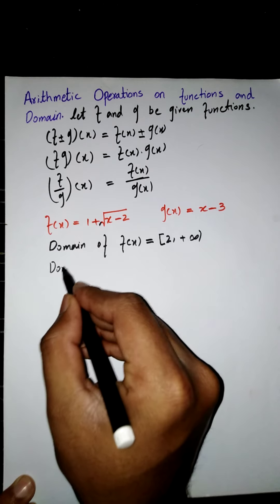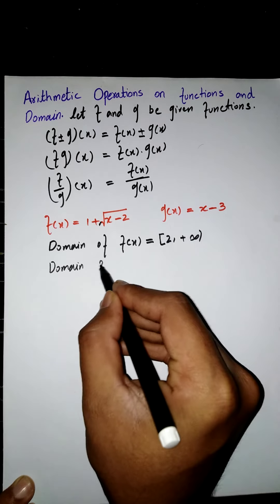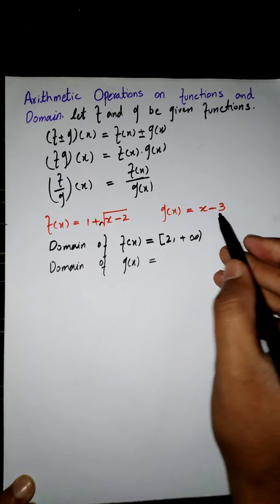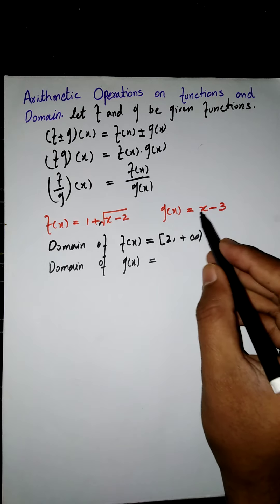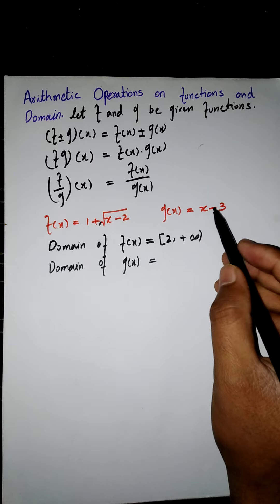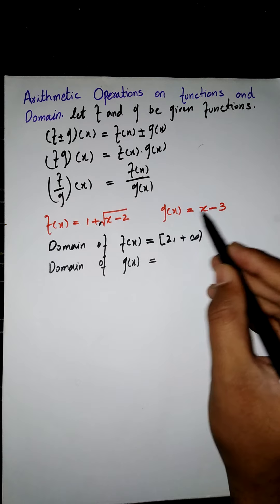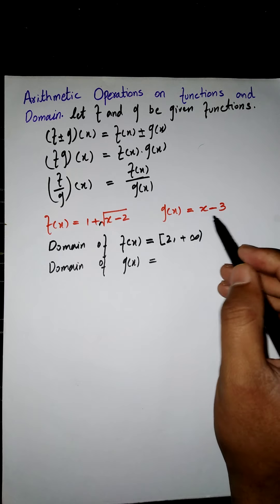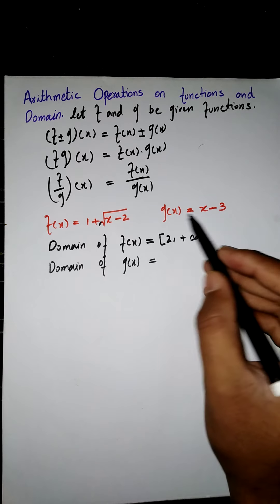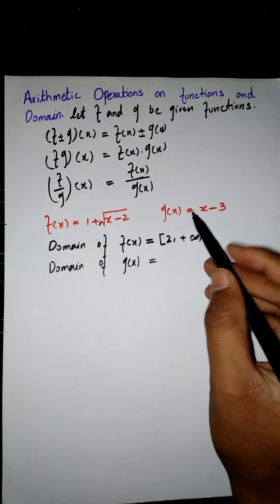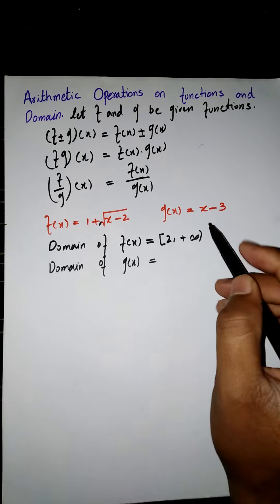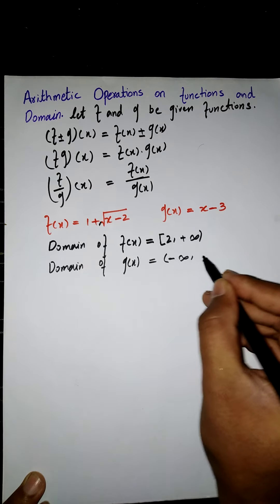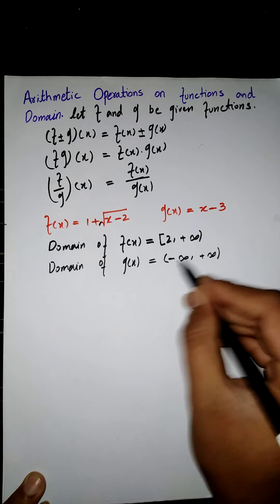Now the domain of g of x: the domain of g of x is all real numbers because there is no radical sign and no fraction term, so we can put any number into g of x. Therefore the domain of g of x is minus infinity to positive infinity.